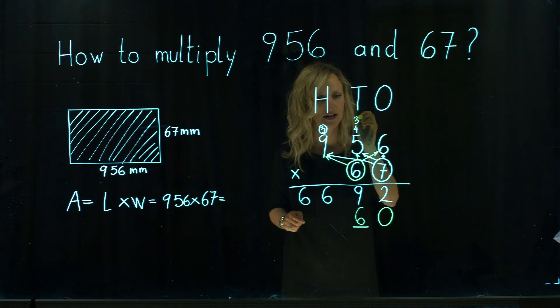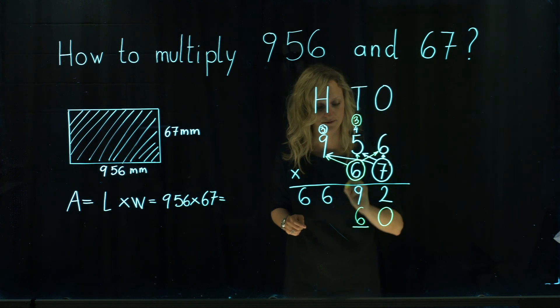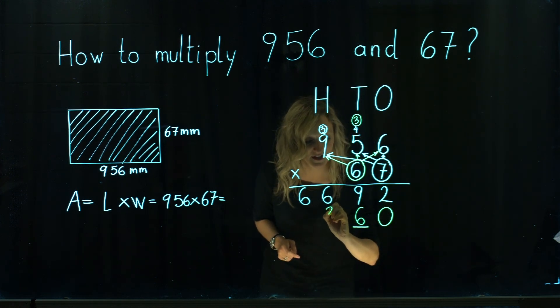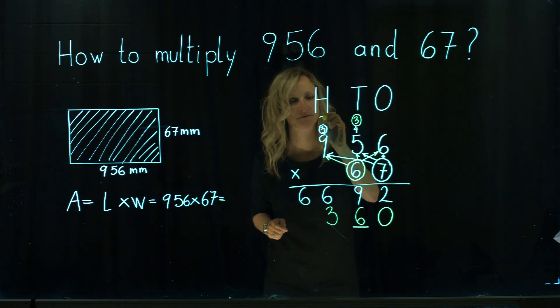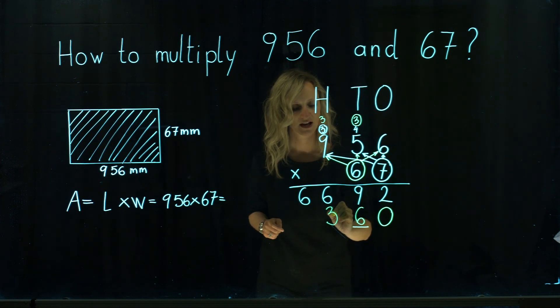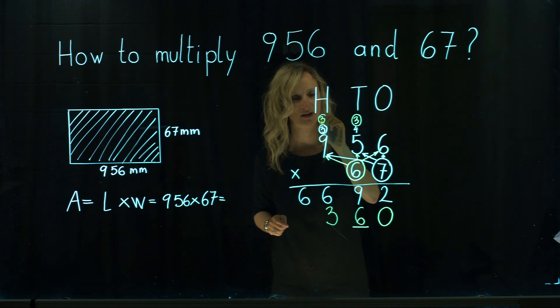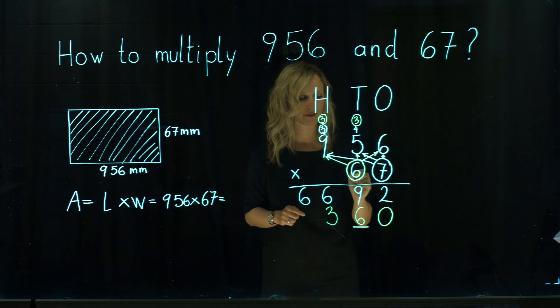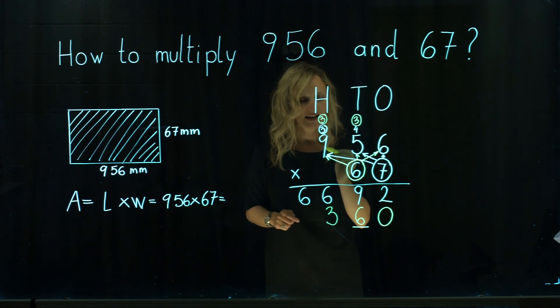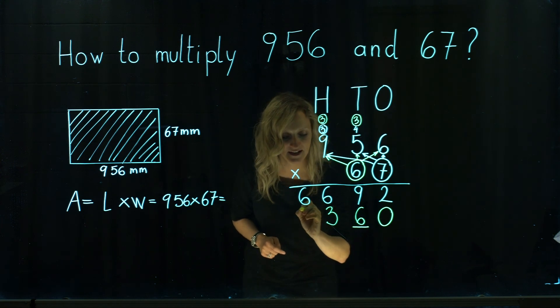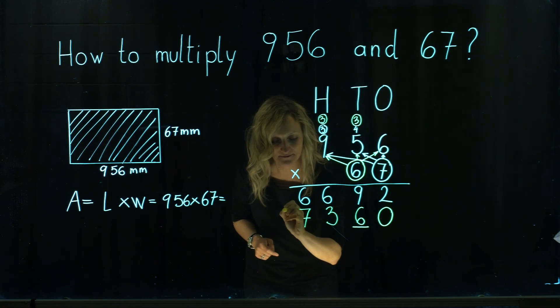6 times 5 is 30 plus 3 is 33. One 3 goes on the bottom. One 3 should be carried over. 6 times 9 is 54 plus 3 is 57.